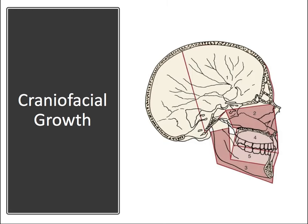Here are the five main regions of the cranium and face: the cranial vault, the cranial base, the nasomaxillary complex, the mandible, and the two dentoalveolar processes supporting the teeth. We'll go through how each of those grows specifically.